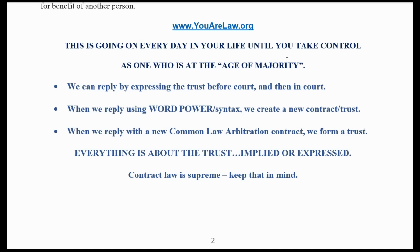We can do this by expressing the trust before court in writing and then in court. When we reply using our Word Power syntax response, which we've taught in our other classes, we create a new contract or trust in a forensic-perfect contract method where we take apart their contract and put a dollar stamp on there as consideration for the new contract. Now they're hearing our contract. And when we reply using the new common law arbitration contract method, we also form a trust — that's a new technique available for premium members at URLaw.org.